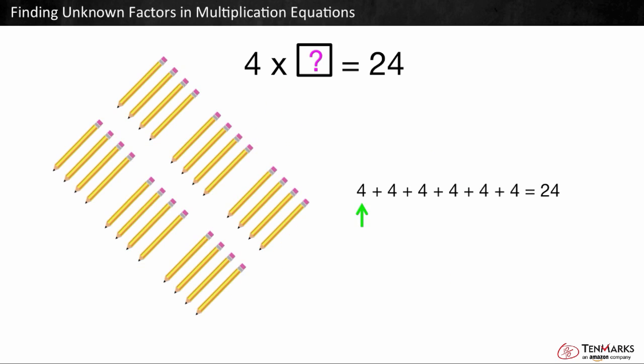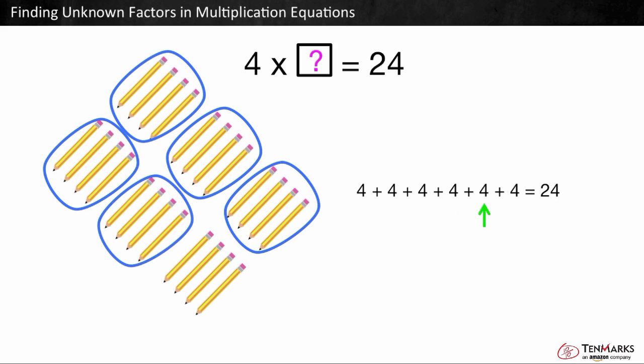How many 4s did we just add? Let's count. 1, 2, 3, 4, 5, 6. Six groups of 4s. This means six groups of 4 make 24. The missing factor here is 6. So 4 times 6 is equal to 24.